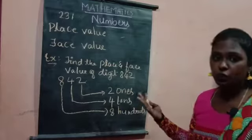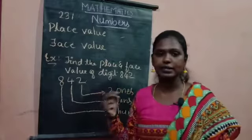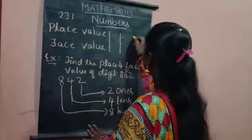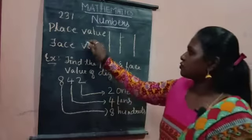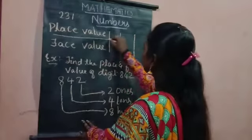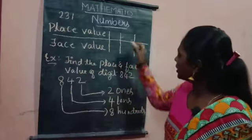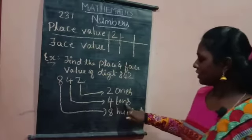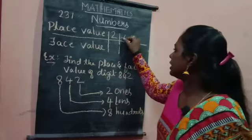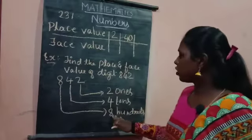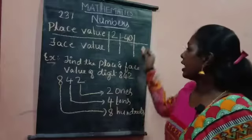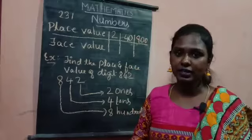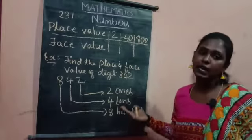This is the place value of the given three-digit number. Let me make a three-column table. The place value of two is two itself. The place value of four is four tens, which means forty. The place value of eight is eight hundred, since it is in the place of hundreds.